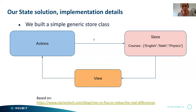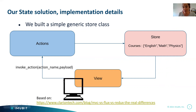Now I'll get into implementation details. Our store has a dictionary interface. The keys are strings and the data can be any type. In our case, the key is the string 'courses' and the data is a list of courses. The originating view — the courses page — when the courses list changes, it calls a function called invoke_action with an action name and payload.